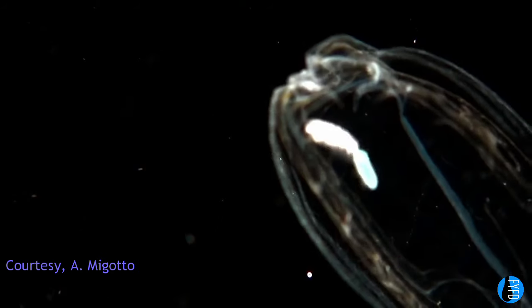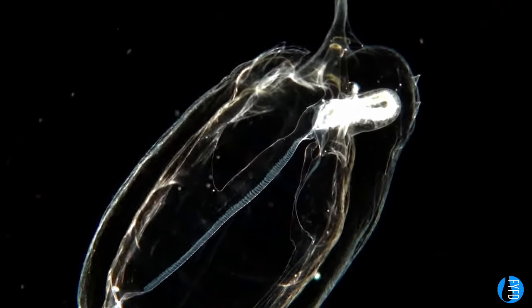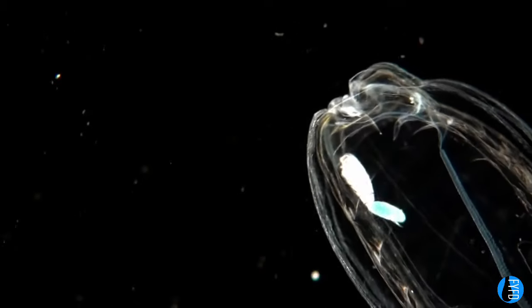Meet the salp. These barrel-shaped invertebrates move using jets of water. They take in water at one end of their body, filter it for food,